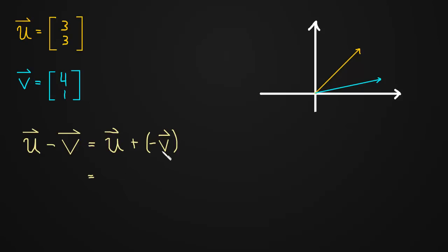And we know how to multiply v by negative 1. That's simple enough. So we're just going to have u, which is [3, 3], plus [-4, -1].